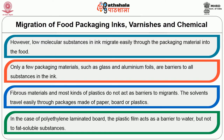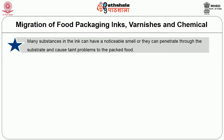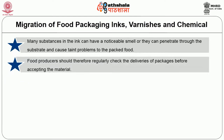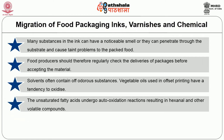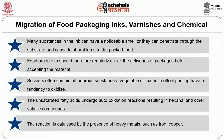Many substances in the ink can have a noticeable smell or they can penetrate through the substrate and cause taint problems to the packaged food. Food producers should therefore regularly check the deliveries of packages before accepting the material. Solvents often contain off-odorous substances. Vegetable oils used in offset printing have a tendency to oxidize; the unsaturated fatty acids undergo auto-oxidation reactions resulting in hexanal and other volatile compounds. The reaction is catalyzed by the presence of heavy metals such as iron and copper.